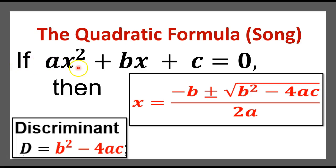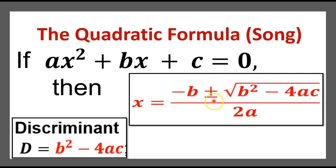If ax squared plus bx plus c equals 0, then x equals negative b plus or minus square root of b squared minus 4ac all over 2a. The discriminant.